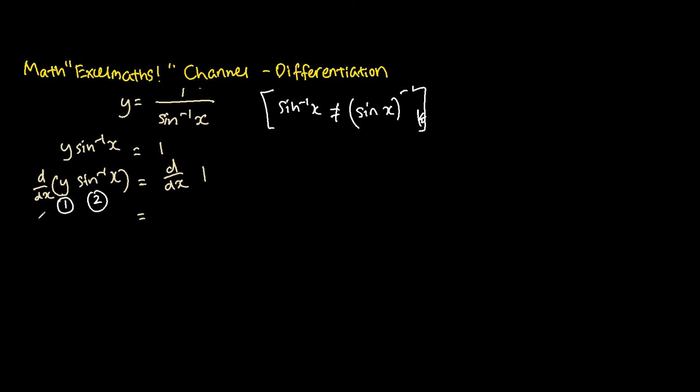So we differentiate the first term, so that will be dy over dx, because this is implicit differentiation. So you're going to take note and keep the second term, so that will be sine inverse x.